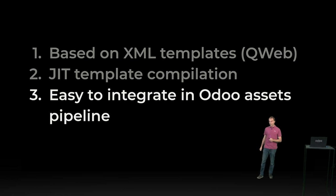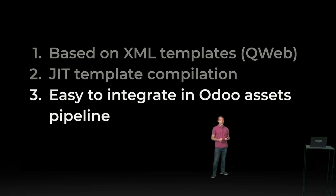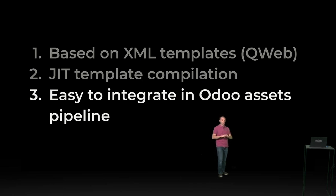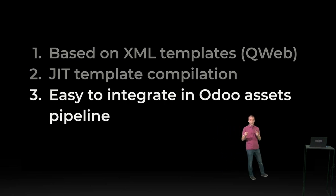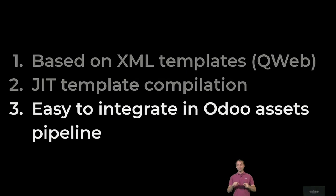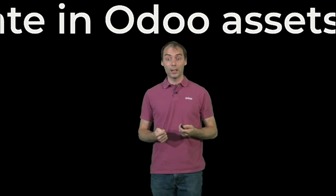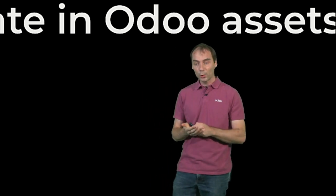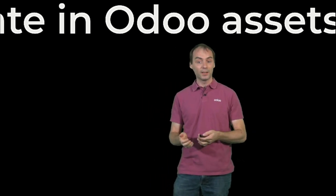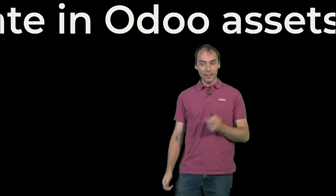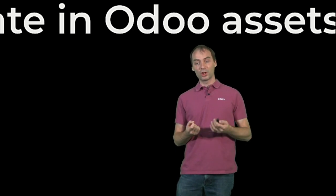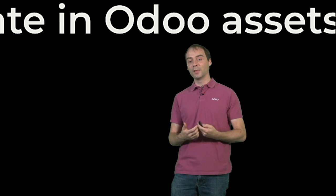Another issue is that we want this framework to integrate easily in the way Odoo manages its assets. Odoo is a big suite of add-ons, and all of them need to be managed, built, minified, and bundled together. It makes it really difficult to integrate with the tooling proposed by mainstream frameworks. Because of that, it was difficult to use those frameworks, and it would make the experience much worse than starting a new React project. Therefore, we started working on the OWL framework, which has those nice properties and is custom-built for our needs.